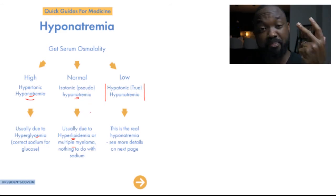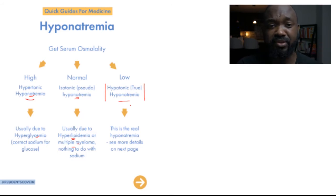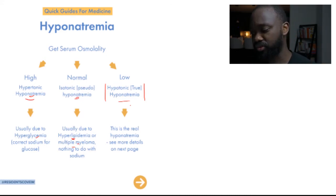The one that we're most concerned about is the hypotonic hyponatremia, because we consider that really true hyponatremia. There is hypotonicity, there's decreased serum osmolality, and there is hyponatremia. They go hand in hand, and that's what we consider true hyponatremia. So when we get that, when we get the serum osmolality, now we need to say where the hyponatremia is coming from.